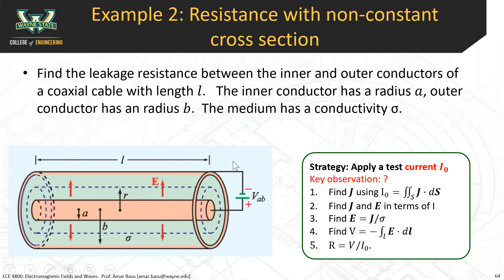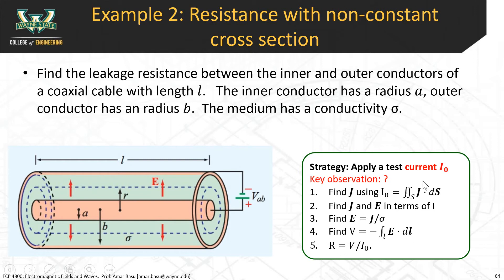This is a more challenging problem. You need to think about the direction of current flow — it goes radially from the inner conductor to the outer conductor. Our strategy is to apply a test current I₀ rather than a test voltage. Applying a test current tends to work better when you have resistors with non-constant cross-sections. Think about how the current density J will behave as the current flows outward.